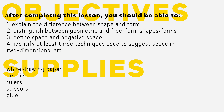In this lesson you will learn about these elements and their special place in art. After completing this lesson you will be able to explain the difference between shape and form, distinguish between geometric and freeform shapes or forms, define space and negative space, and identify at least three techniques used to suggest space in two-dimensional art. Supplies: white drawing paper, pencils for sketching, and rulers.